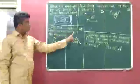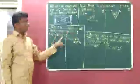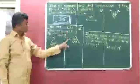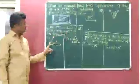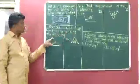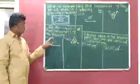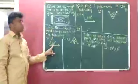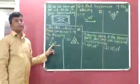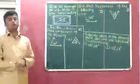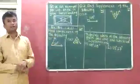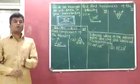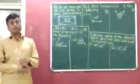Find the complement of the following. Here two figures are given and we have to find the complement of 20 degrees. If you want to find the complement of any angle, you have to subtract the given angle from 90 degrees.